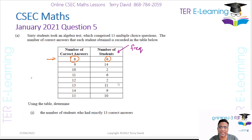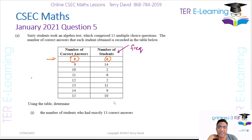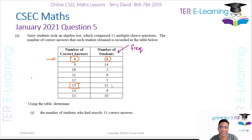Now the first part asks us, using the table, to determine the number of students who scored exactly 13 correct answers. All we need to do is read from the table — the number of students who got 13 correct answers is 11. So the answer for this part is simply 11.